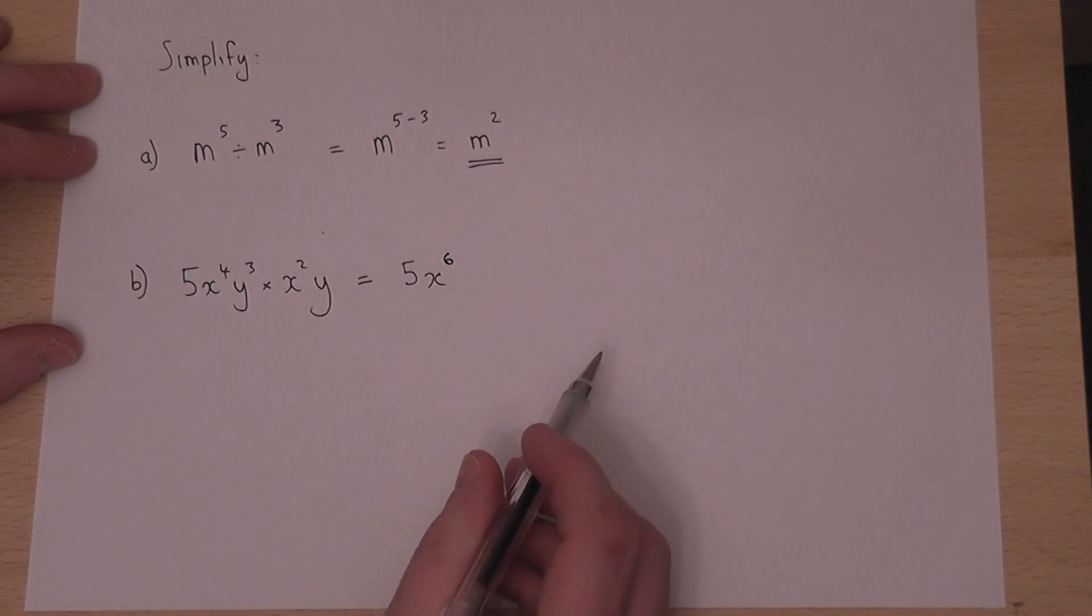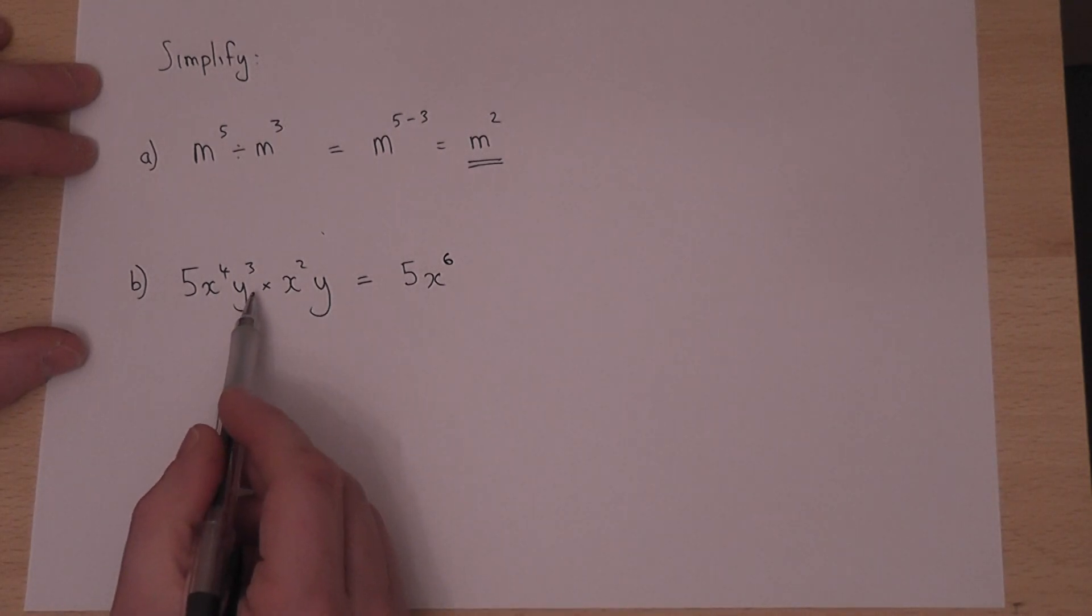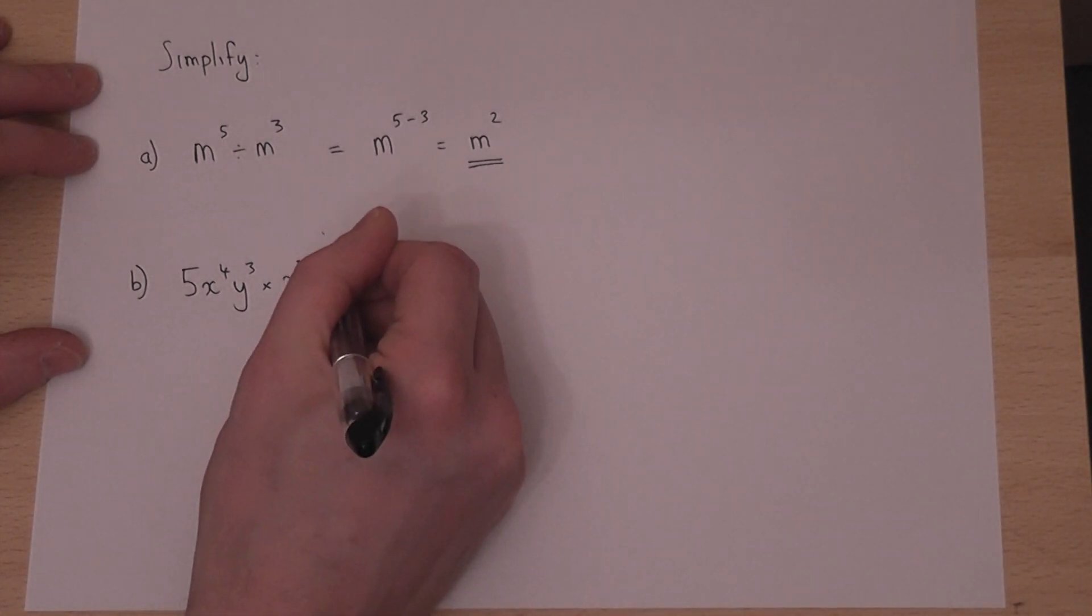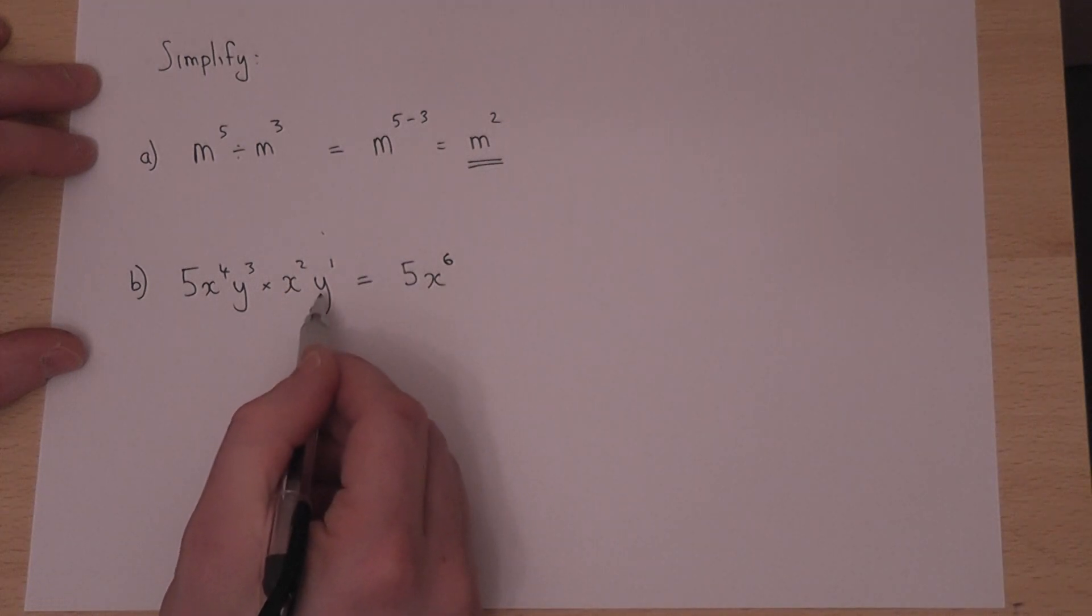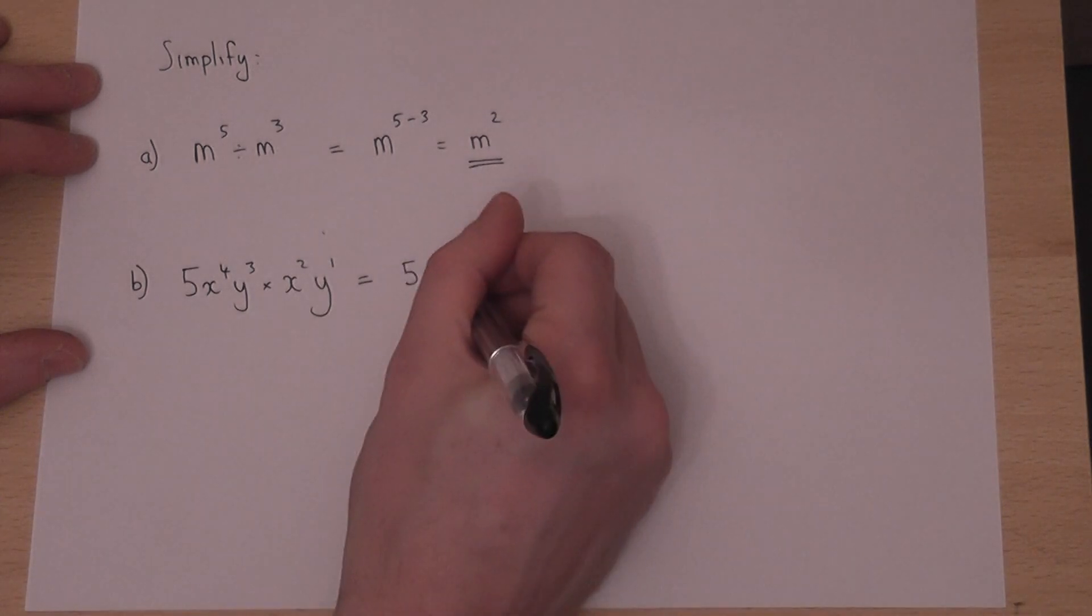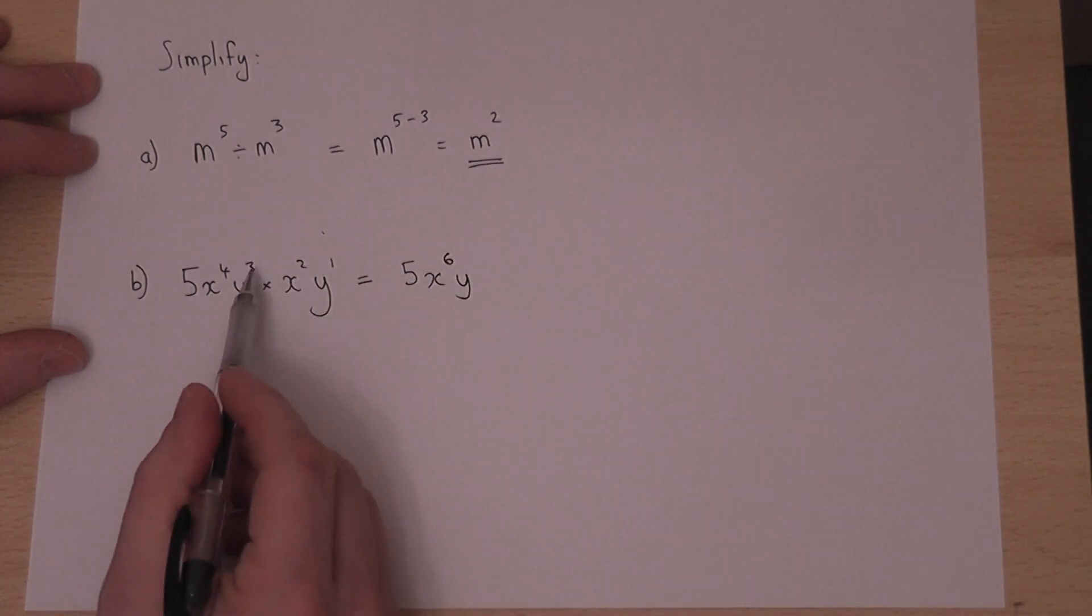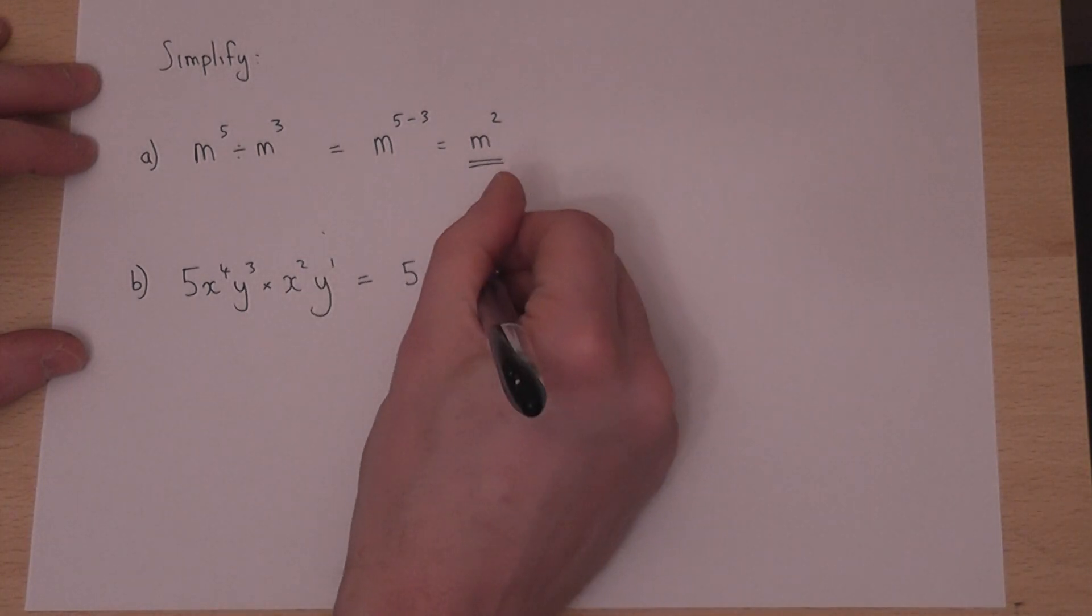We then come to the key one, which is the y's. There is actually a 1 here. y by itself means y to the power of 1. Again, we multiply. We add the powers. 3 plus 1 is 4, so we put a 4 here.